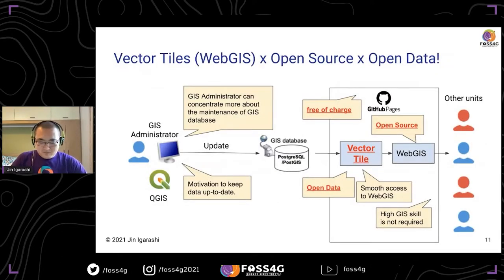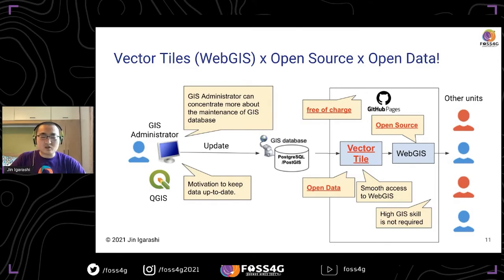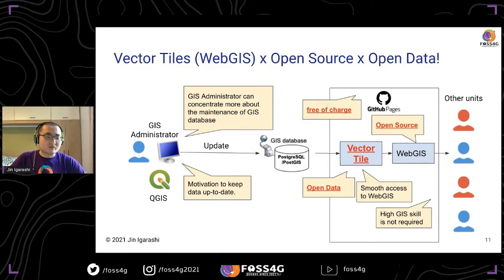I'm using vector tiles by open source and as open data. The advantage is we can use GitHub Pages for hosting free of charge as open data. And WebGIS nowadays — a lot of people are using Google Maps, so the WebGIS interface doesn't necessarily require high GIS skills. All staff in water utilities can use WebGIS, and GIS administrators have motivation to keep data up to date. This approach is very powerful in Africa, especially in small water utilities.